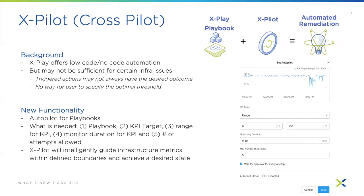We are further enhancing playbooks with Cross-Pilot. Cross Play offers low-code, no-code optimization but may not be sufficient for certain infrastructure issues — triggers and actions may not always achieve the desired outcome, and there's no way for the user to specify an optimal threshold. Cross-Pilot introduces autopilot for playbooks. You need a playbook, a KPI target, a range for the KPI, a monitor duration, and a number of attempts. Cross-Pilot will intelligently guide infrastructure metrics within defined boundaries to achieve your desired state — providing automatic remediation for your infrastructure.